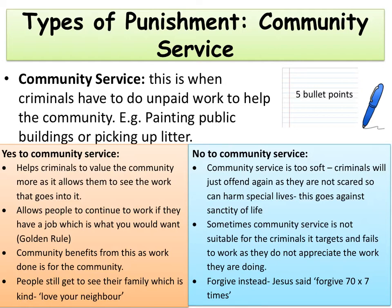Sometimes community service is not suitable for the criminals it targets and fails to work because they don't appreciate the work they're doing. Community service is reliant on criminals realising the errors of their ways by seeing the value they're adding to the community. If people are not likely to do that, then community service won't work at all. Finally, there's an argument that goes against all forms of punishment: Jesus tells people to forgive seventy times seven times, which would go against any type of punishment as forgiveness means not punishing people.